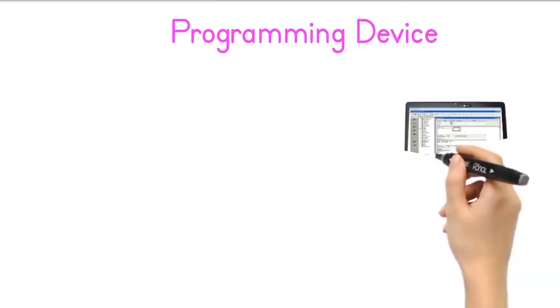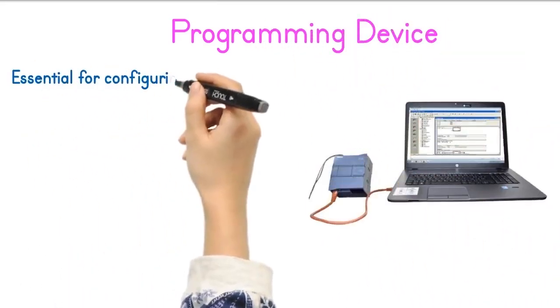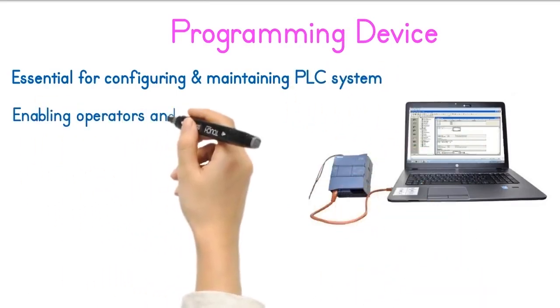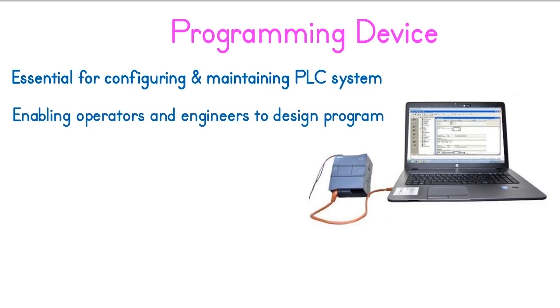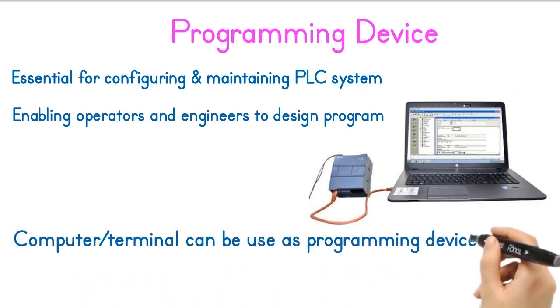Programming Device: The programming device is essential for configuring and maintaining PLC systems, enabling operators and engineers to design automation programs. A computer or terminal can be used as PLC programming device.